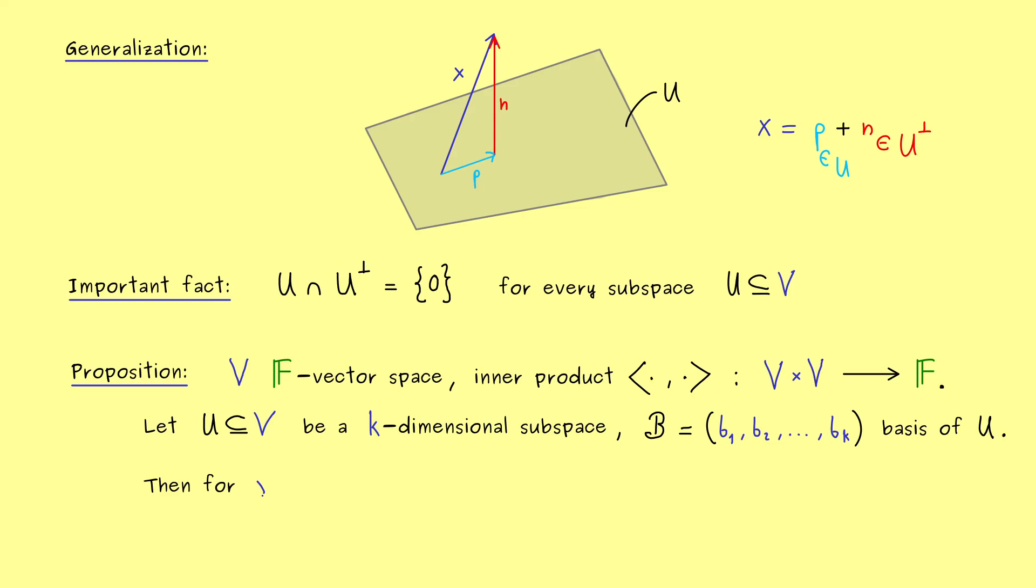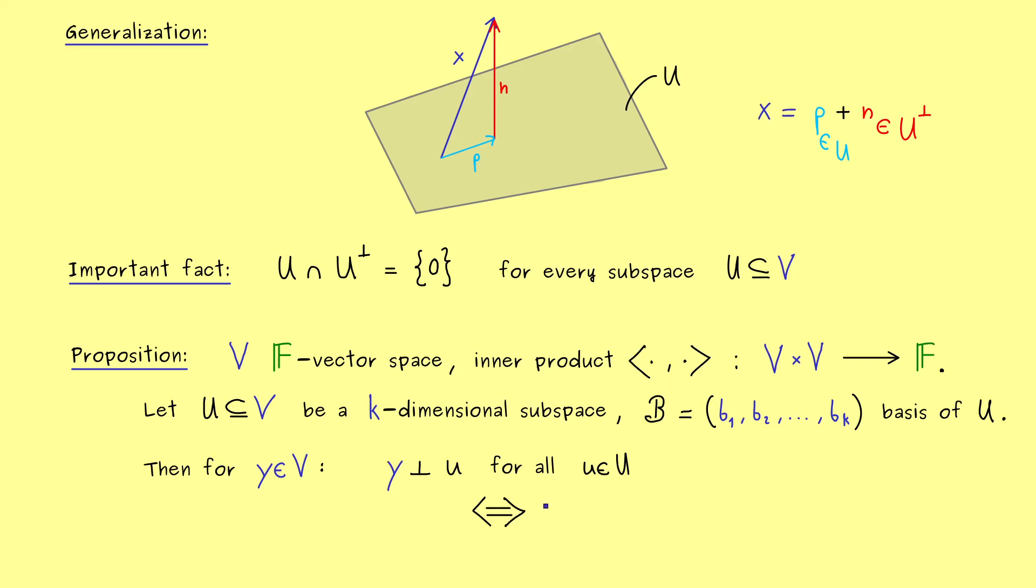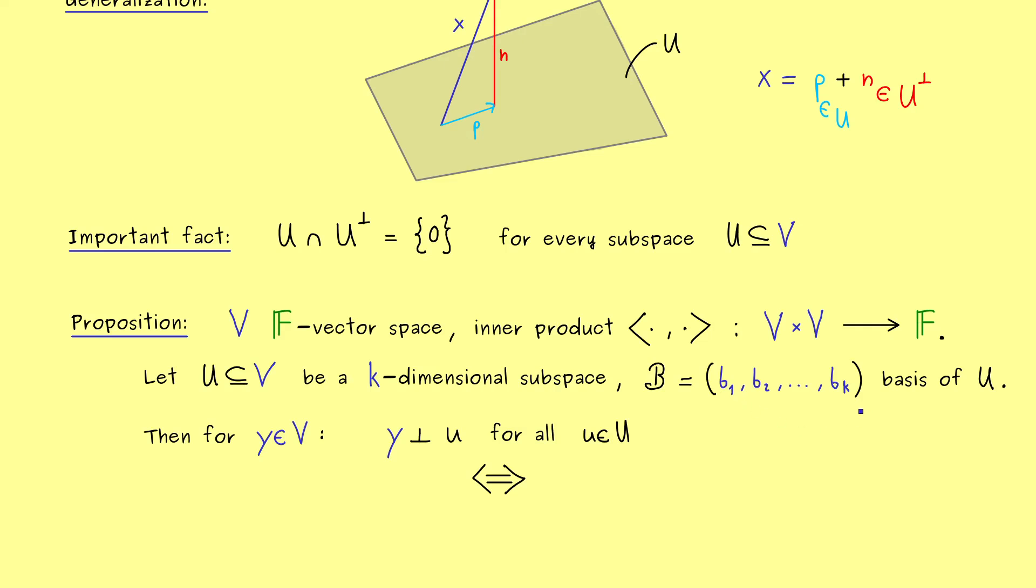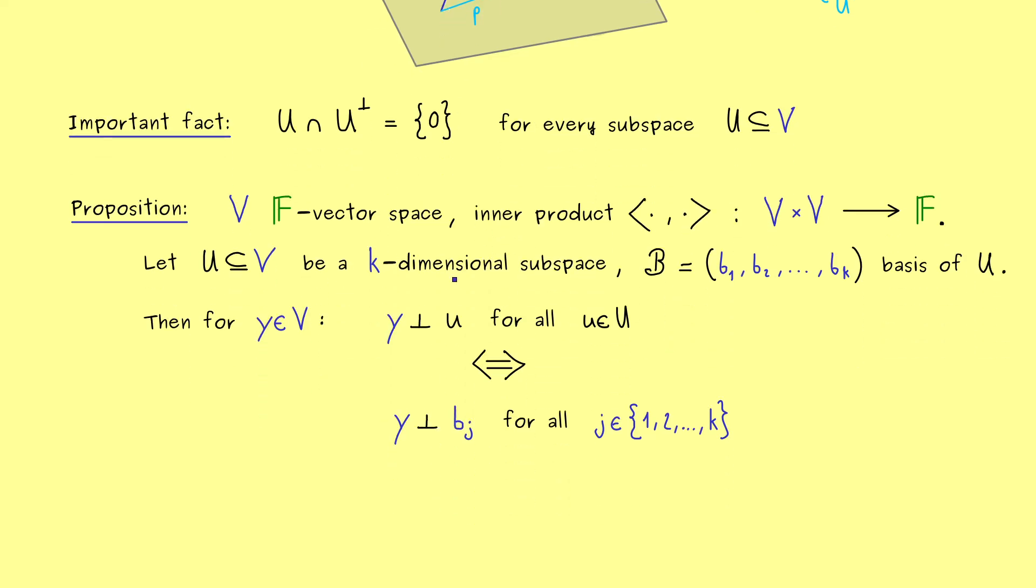So this is a standard thing we can do for every subspace u. And now it turns out, if we want to have a vector in the complement of u, we don't have to check the orthogonality with every element in u. It's sufficient to check it for the basis elements. So maybe let's say we have a vector y in v, and then we can say the following: y is orthogonal perpendicular to each element in u if and only if y is orthogonal to each element b₁, b₂, and so on. In other words, we only have to check this orthogonality for finitely many vectors. So you can remember, checking the basis is enough for the orthogonality. And please don't forget, this fact holds no matter which inner product we choose.